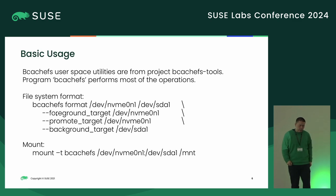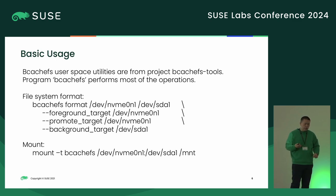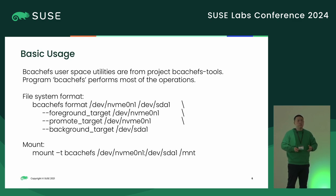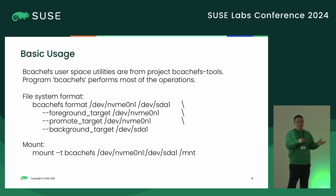The last option is the background target. The background target is a normal storage target to leverage copies of the data. It's called 'background' because in write-back mode the data will first go into the foreground target, and in spare time a background thread does data balancing, moving data from foreground to background.